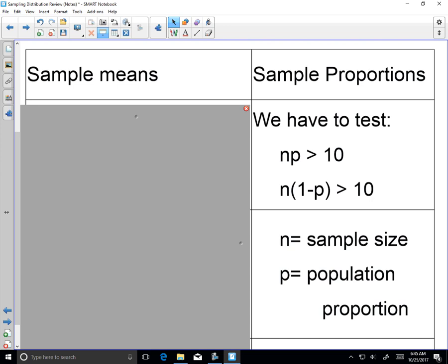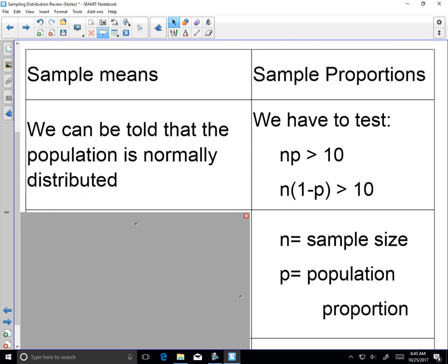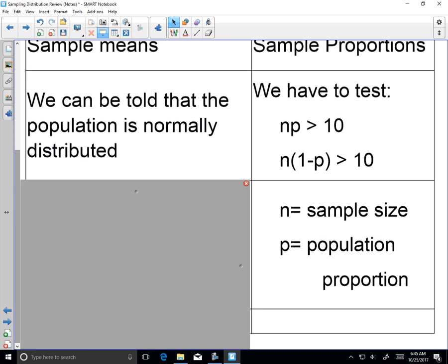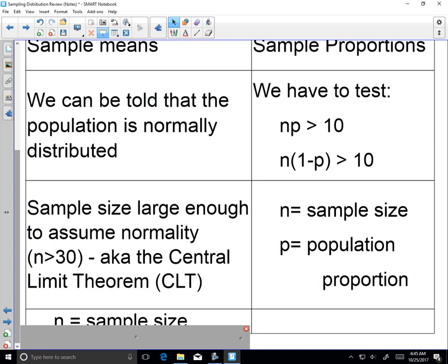If we're dealing with a sample means problem, we have our best case scenario. If you're told that the population is normal, then we know that our sampling distribution is going to be normal. And we just copy that sentence from the problem.